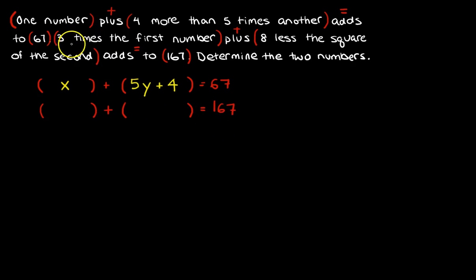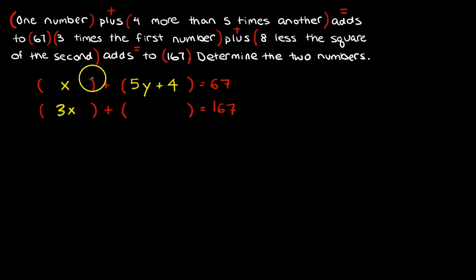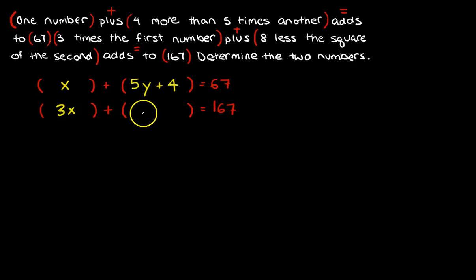Let's go back and look. Three times the first number — my first number was X — so this is 3X. Now, this is the one a lot of people had trouble with: 'eight less the square of the second.' Let's go backwards again. Square of the second — what's my second number? It was Y. Some of you put 5Y as your second number — it's not 5Y. It's just Y.